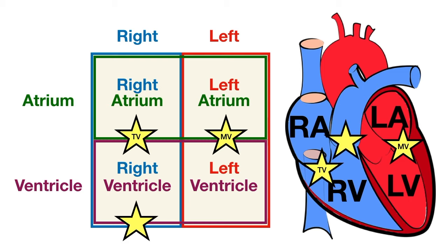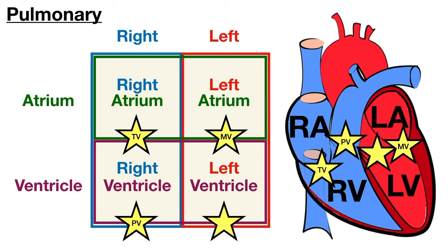The pulmonary valve is located where blood exits the right ventricle and enters the main pulmonary artery or pulmonary trunk. Its function is to prevent the backward flow of blood into the right ventricle. On the left side, the aortic valve is located between the left ventricle and the aorta. Its function is to prevent backflow from the aorta to the left ventricle during diastole when the left ventricle is in a low-pressure state filling with blood from the left atrium.